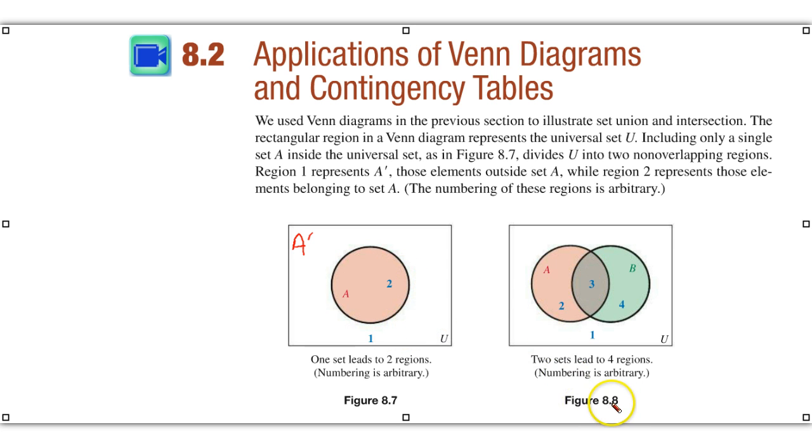Now in figure 8.8, we see the universe, and that is represented by 1. But now we have two sets, and there is union, there is intersection, and we're referring then to set A using reference numbers 2 and 3, and set B, 3 and 4, and we see that 3 represents the intersection. So again, we're just arbitrarily numbering these regions as reference points.